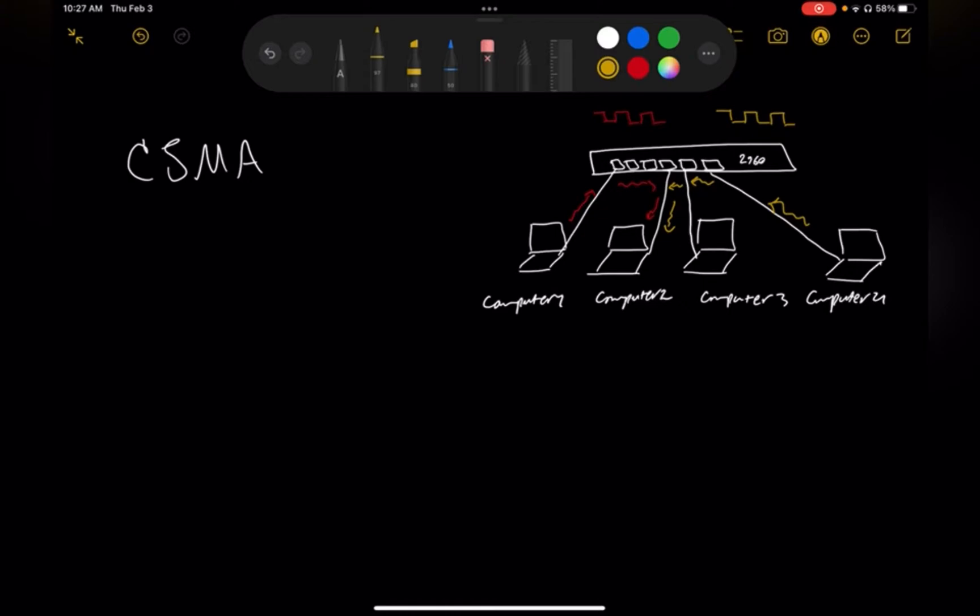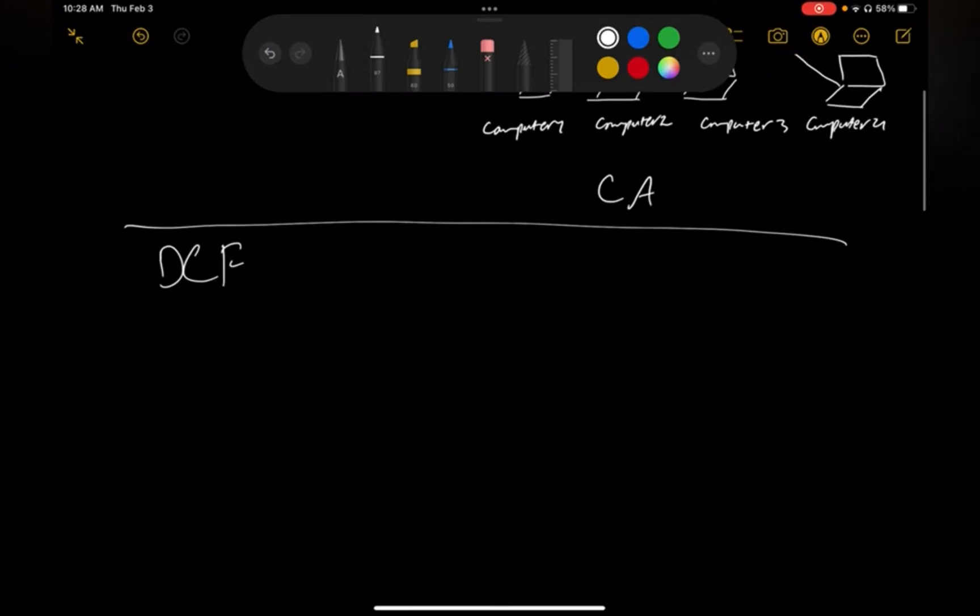The thing that in networking concept we call collision - for sure you have collision here. How to prevent it? They do channel assessment. They sense the carrier in the channel. If there is nothing, they will share data. So this is channel assessment and this is carrier sensing.